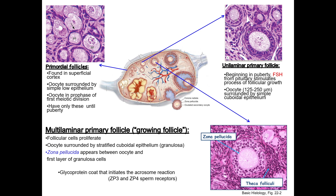If fertilization occurs, the zygote will cleave within the zona pellucida and hatch from it only after entering the uterus. At the same time, the interstitial cells or connective tissue cells adjacent to the basal lamina will differentiate into a bilayered structure called the theca folliculi, which will encapsulate the follicle, eventually forming several layers. Most follicles will now die before they reach the next stage, the secondary or antral follicle.